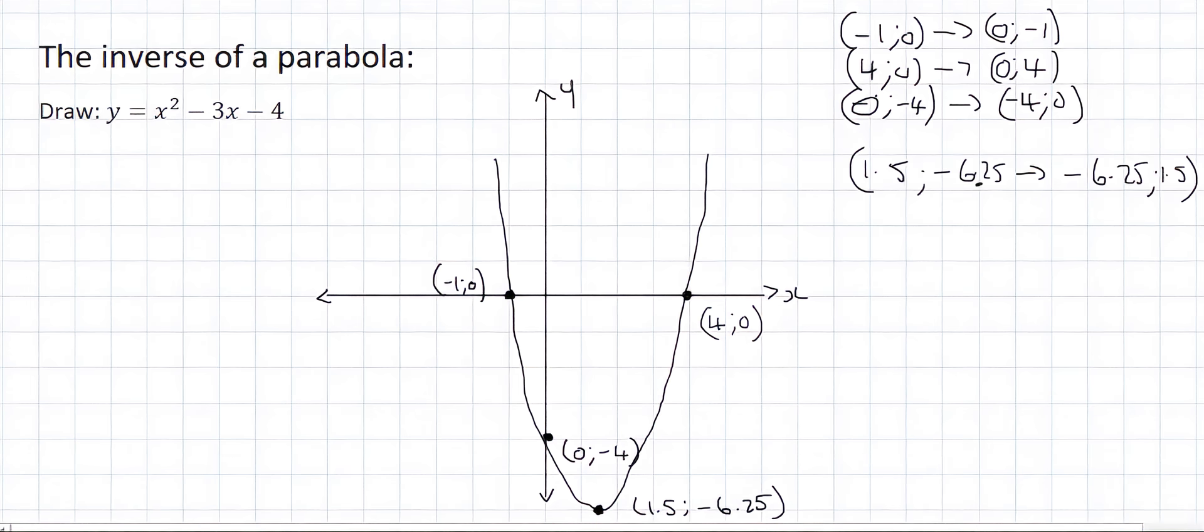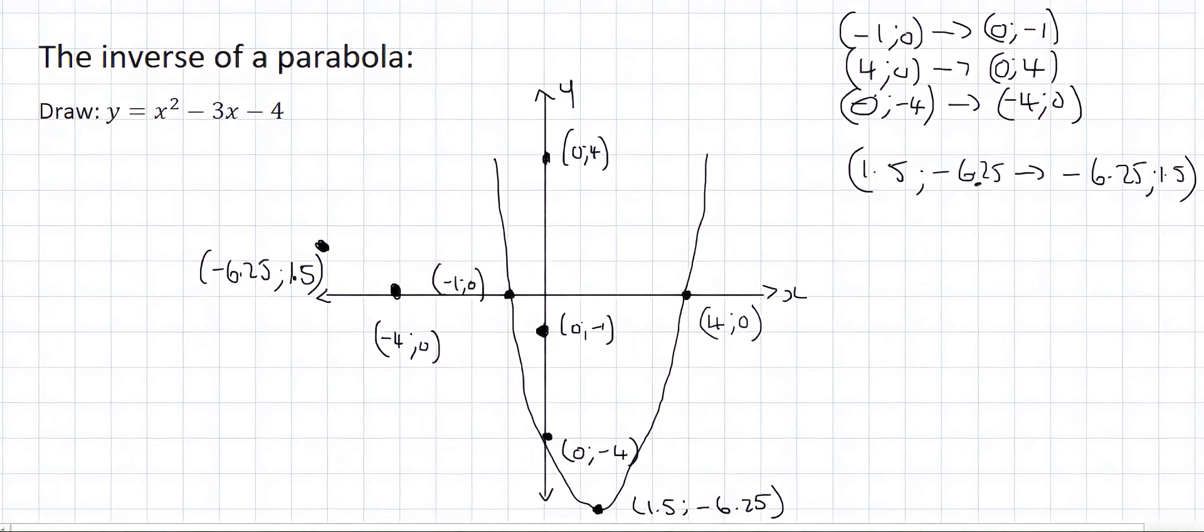So now we can just go plot these new points. So 0 minus 1, 0 and 4, minus 4 and 0, and minus 6.25 and 1.5. It's about there. And then we can just simply connect the dots. And so we get something that looks like that.